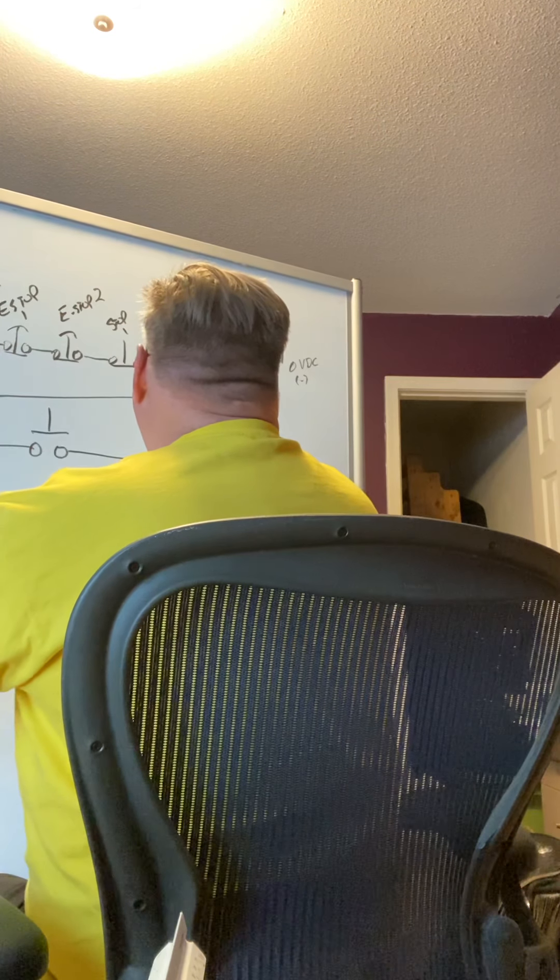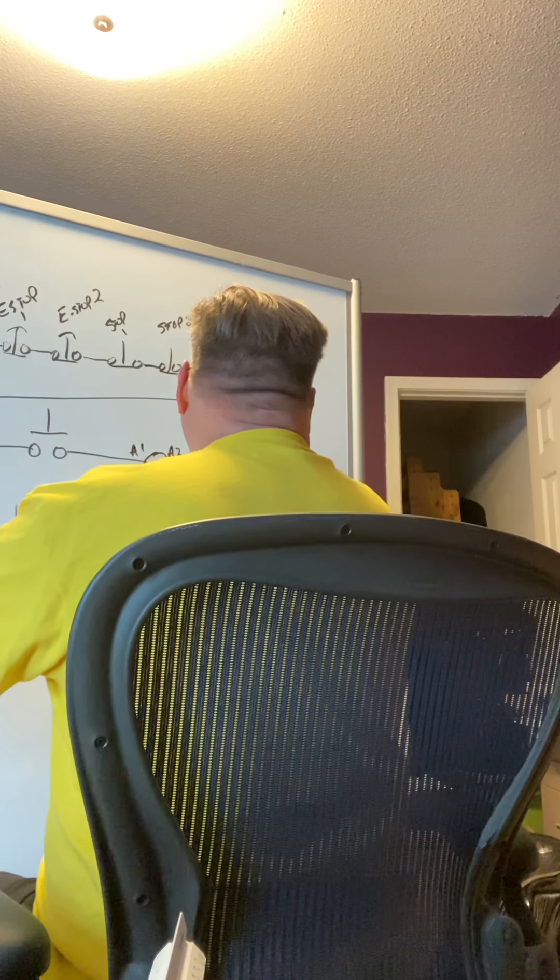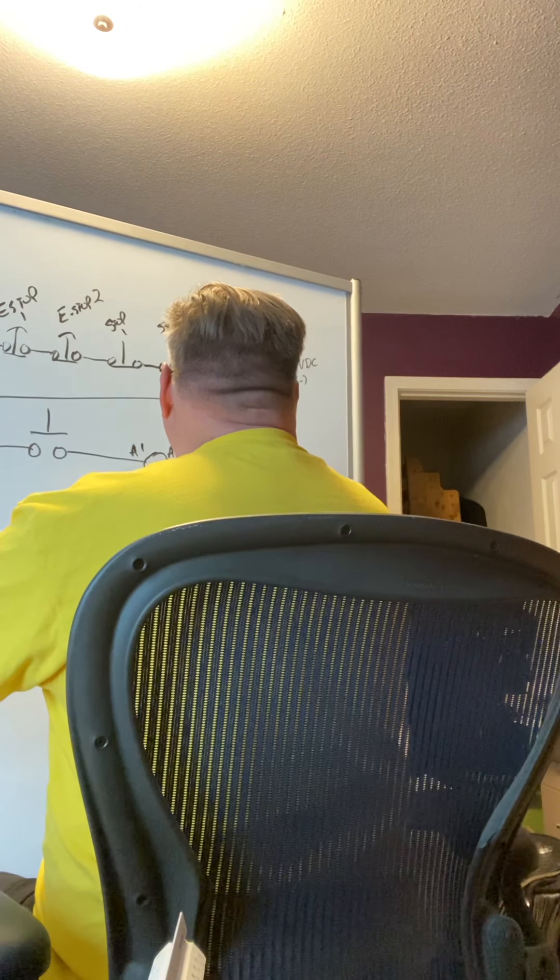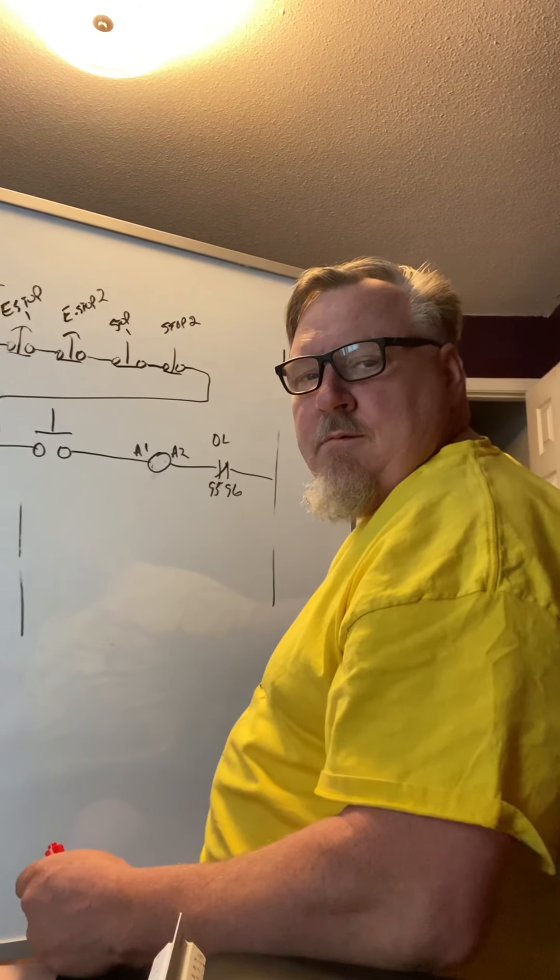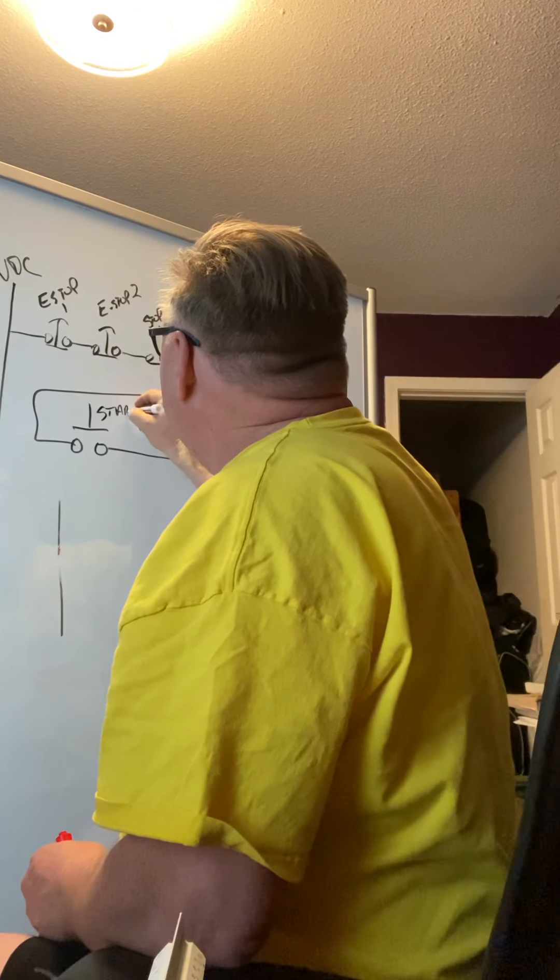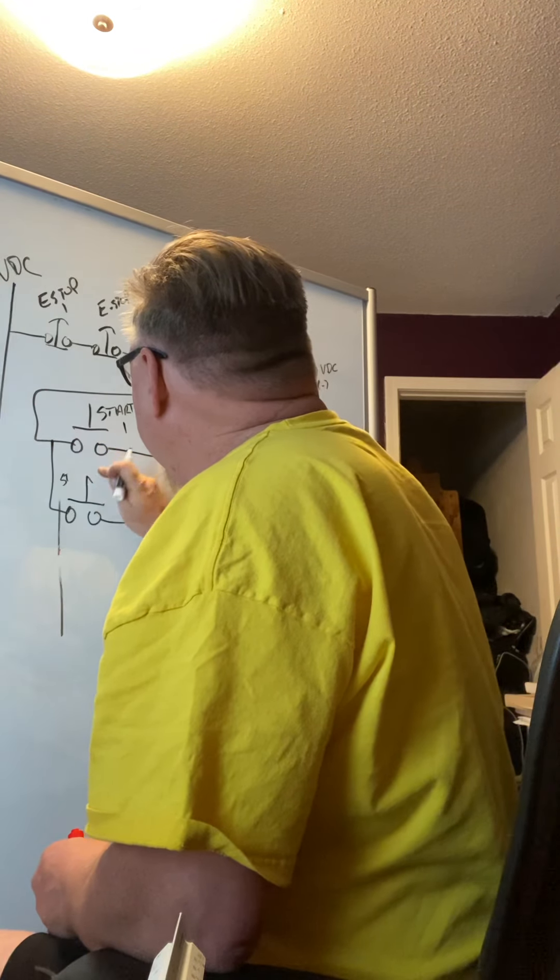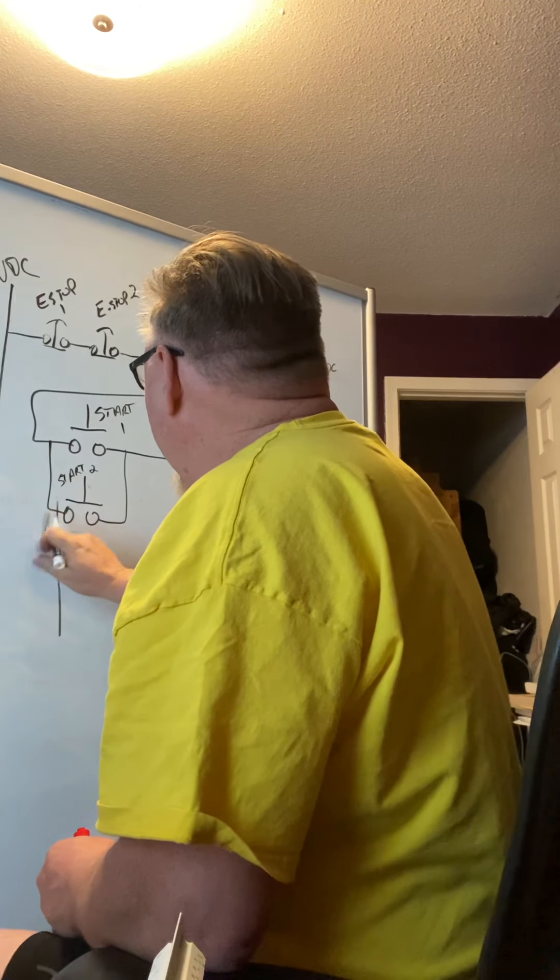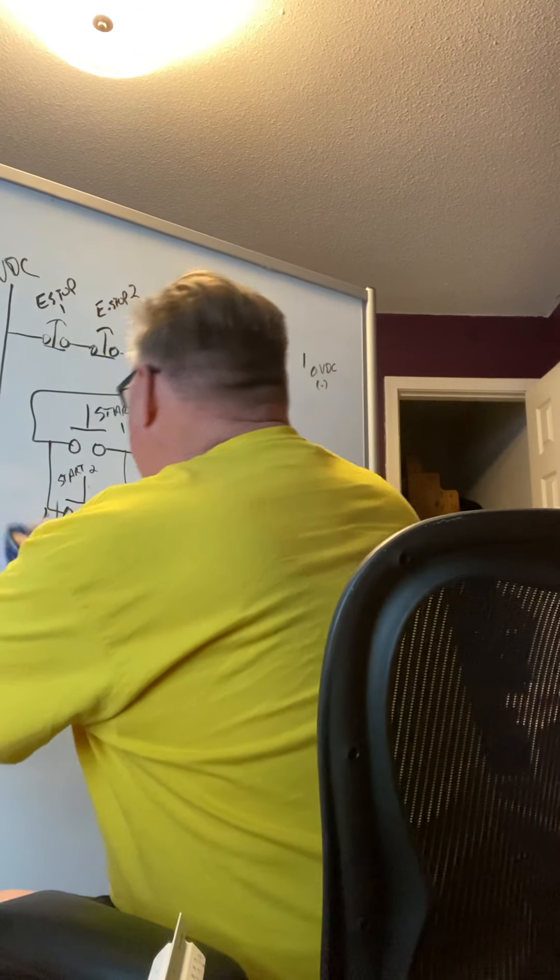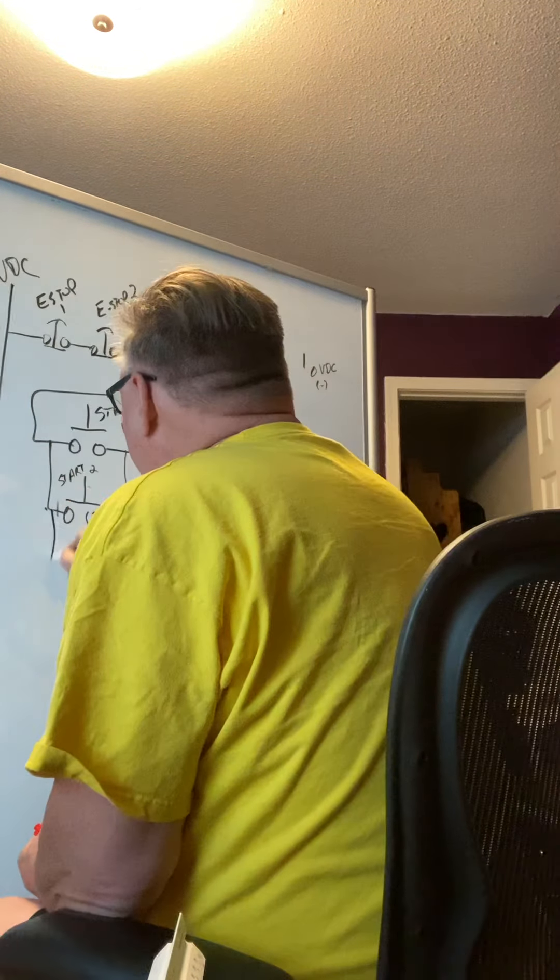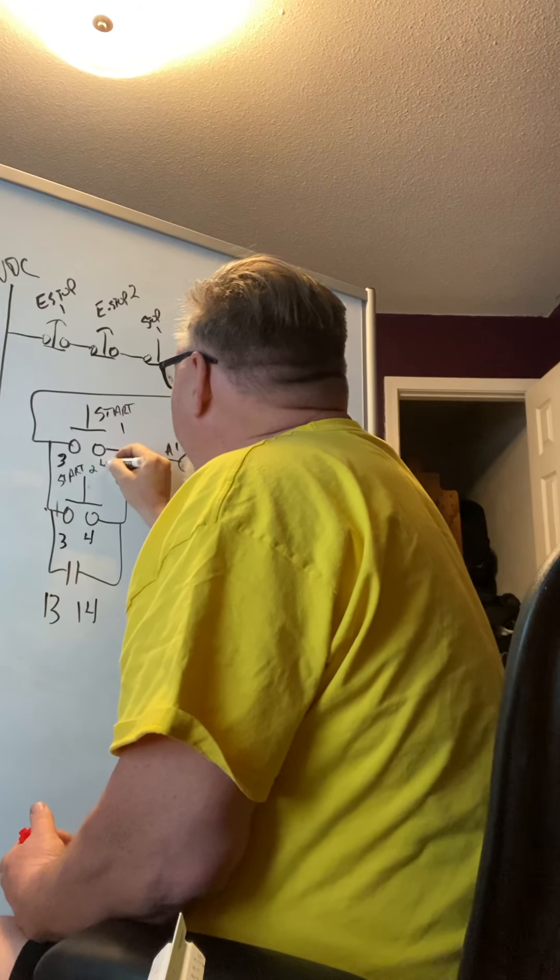So I'm going to bring this back round here. So we have a start here. We have our armature, A1, A2 here, our normally closed overload, 95, 96. If we've got, these are stops. All our stops are in series. But our starts, we still have our latch. So 13, 14, 3, 4, 3, 4.